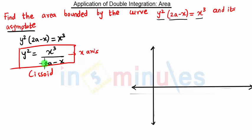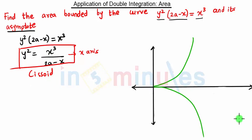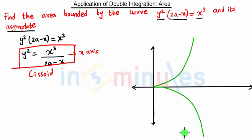This curve is symmetric about the x-axis. This curve is nothing but a cissoid — this is the standard equation of a cissoid, and you have to remember the standard equation. The cissoid starts from the origin, goes upward in an exponential form, with the same mirror image on the negative side.